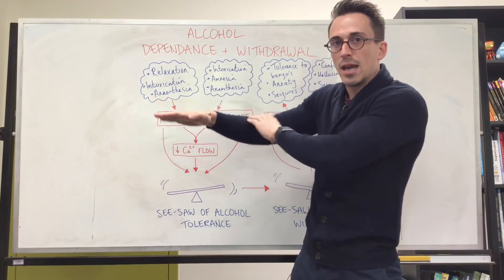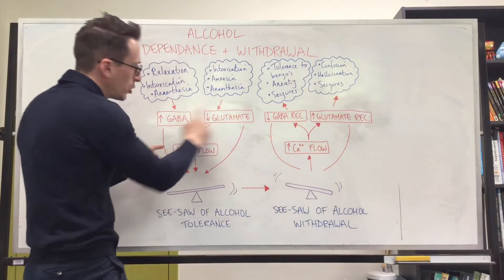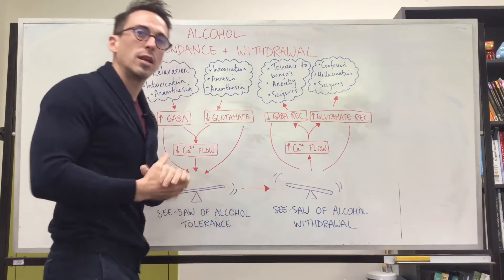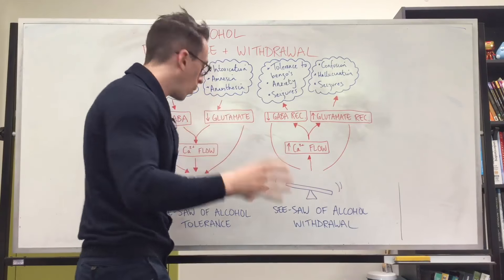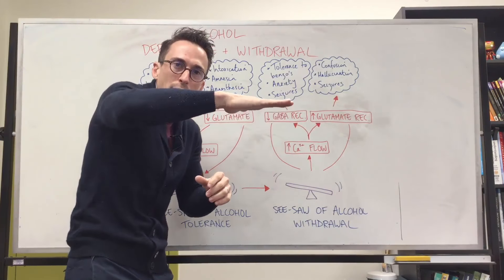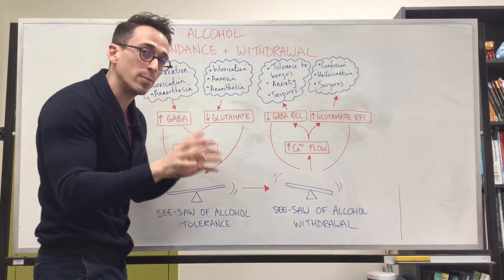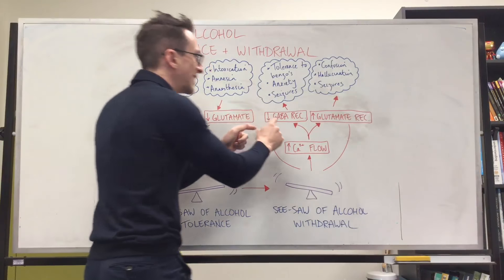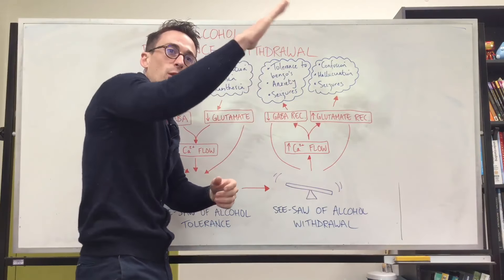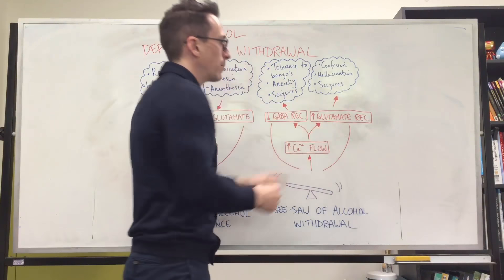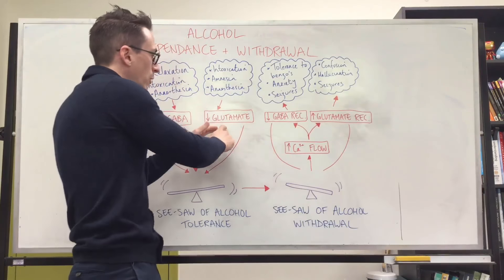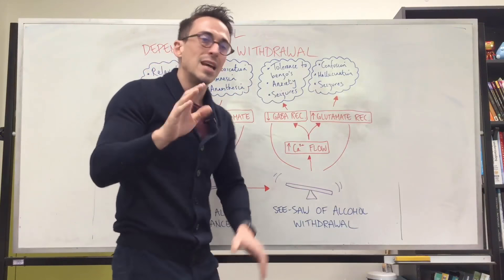What the body needs to do is balance it out. For example, if alcohol decreases the flow of calcium into neurons, what it will do long term is increase the number of calcium channels available, so that whatever calcium is left can still flow in. Because alcohol increases GABA neurotransmitters, the brain decreases the number of GABA receptors — while there's a lot of GABA available, there aren't many receptors for it to bind to. With glutamate, because alcohol decreases glutamate activity, the brain increases the number of glutamate receptors to bring things back into balance.